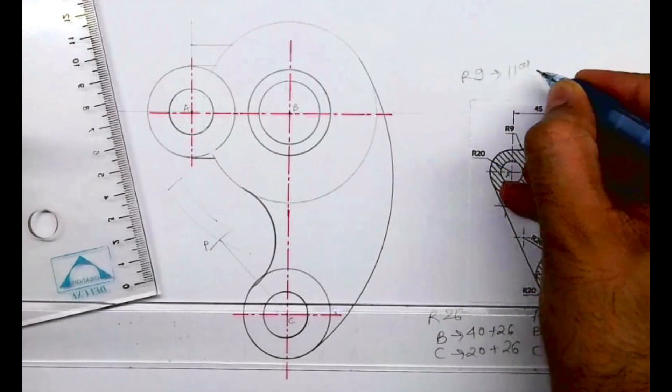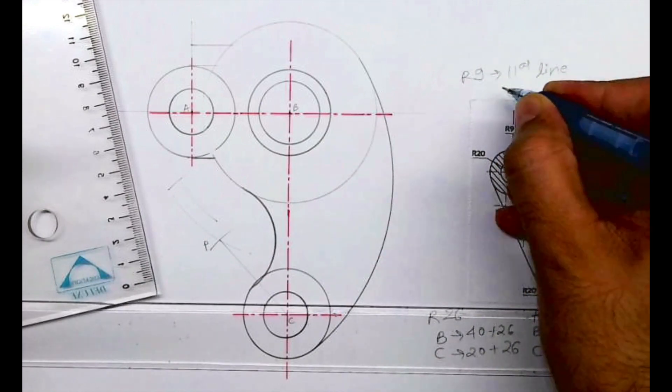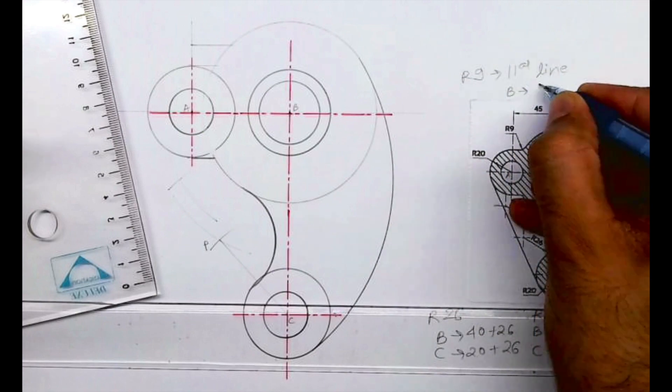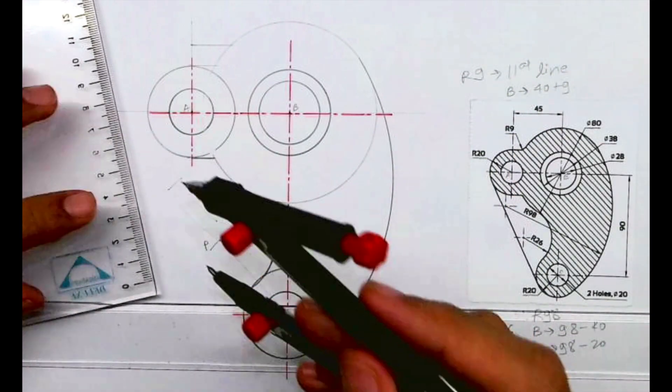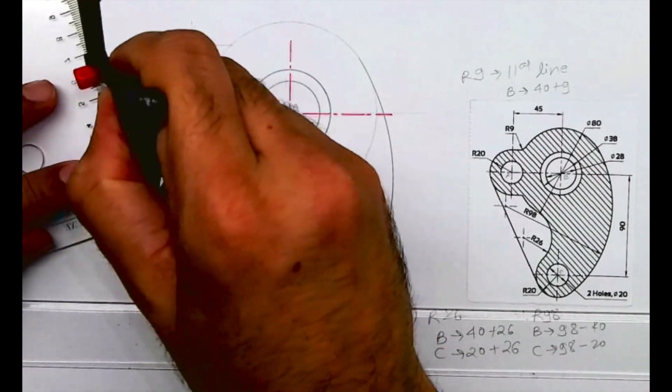See, for radius 9 you draw a parallel line, and from B you cut 40 plus 9, which is 49. Wherever they intersect, from that point you can draw radius 9.